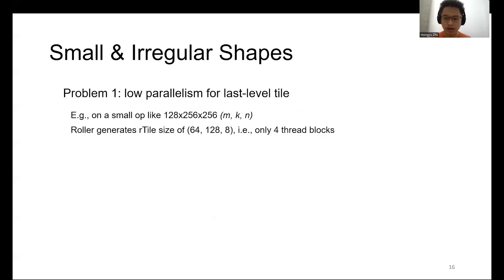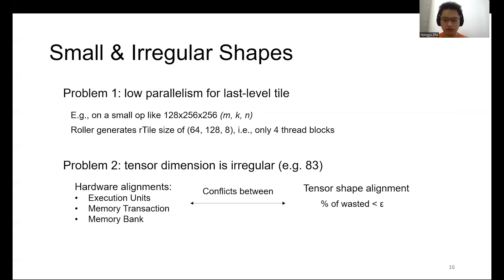There are some common cases which we need to address for better performance. The first one is caused by small operators. In this case, Roller will generate kernels that suffer from low parallelism. Another issue is that an operator might have arbitrary tensor shapes, such as convolution with image size of 83. In this case, we'll have trouble finding rProgs that satisfy all these requirements. But for both issues, we have corresponding solutions, and they do not introduce any extra tricky empirical hyperparameters. Feel free to check our paper for details if you are interested.